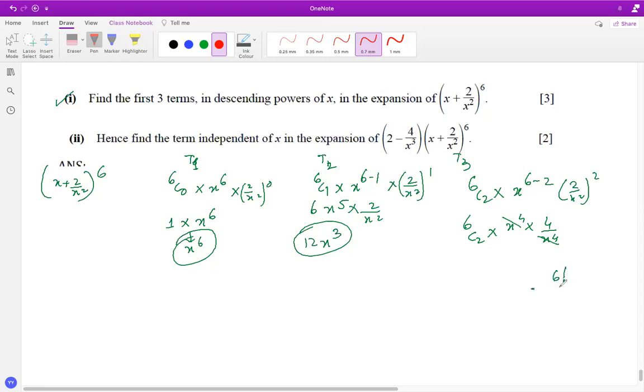6C2, using factorial notation, is 6 factorial over 4 factorial times 2 factorial, which simplifies to 6 times 5 over 2, which is 15. 15 times 4 is 60. So the first three terms are x to the power 6 plus 12x cubed plus 60, automatically going into descending power.